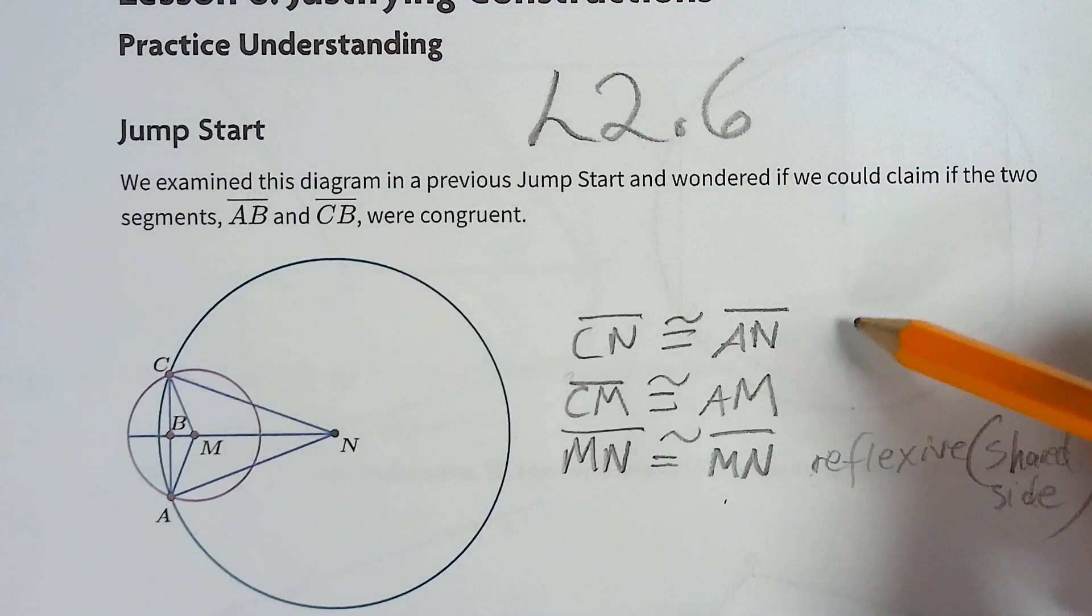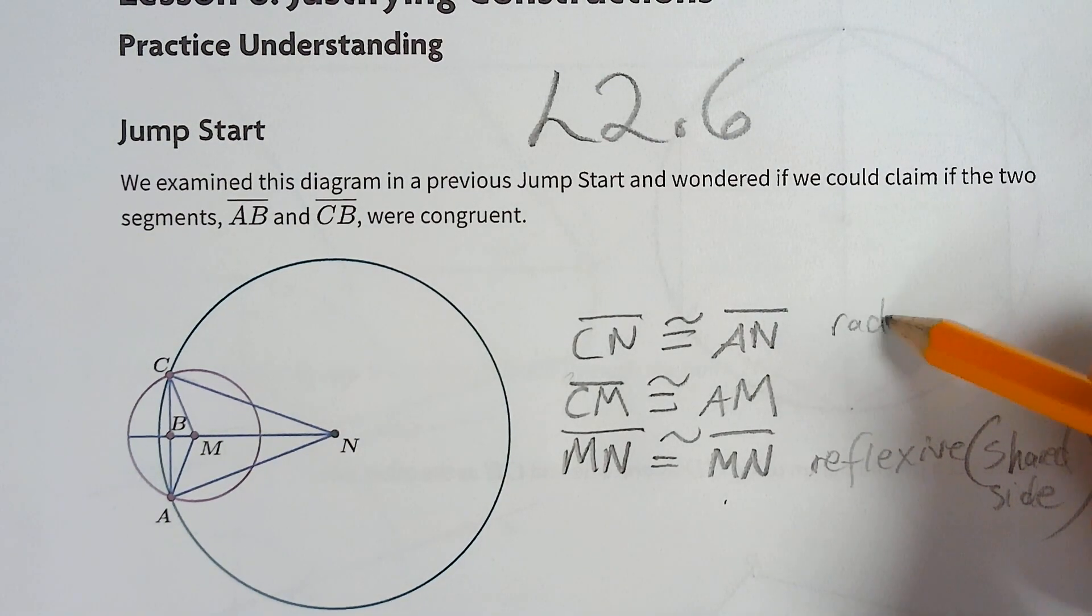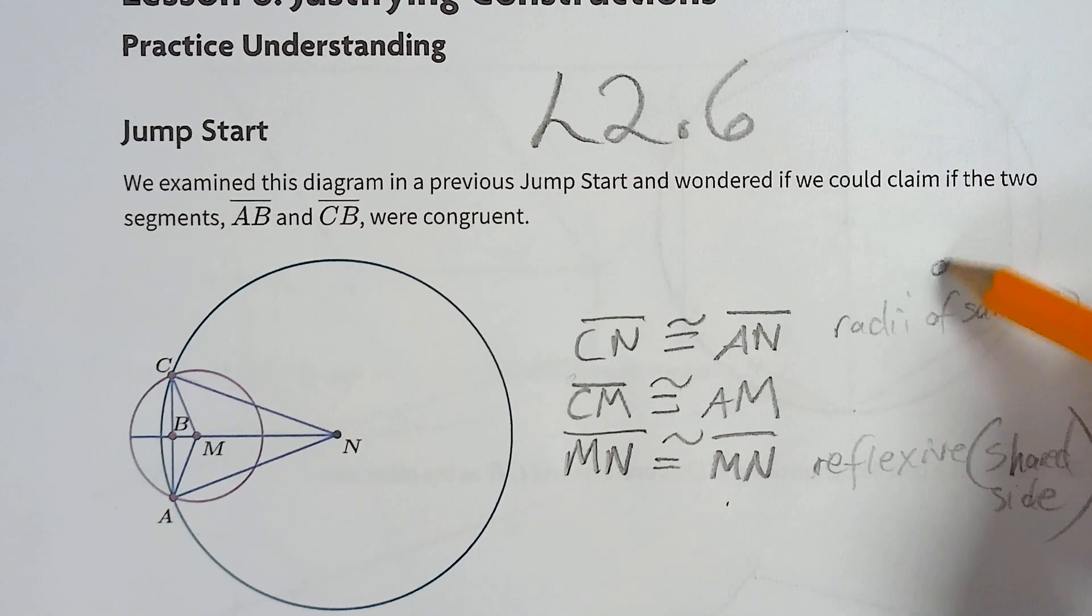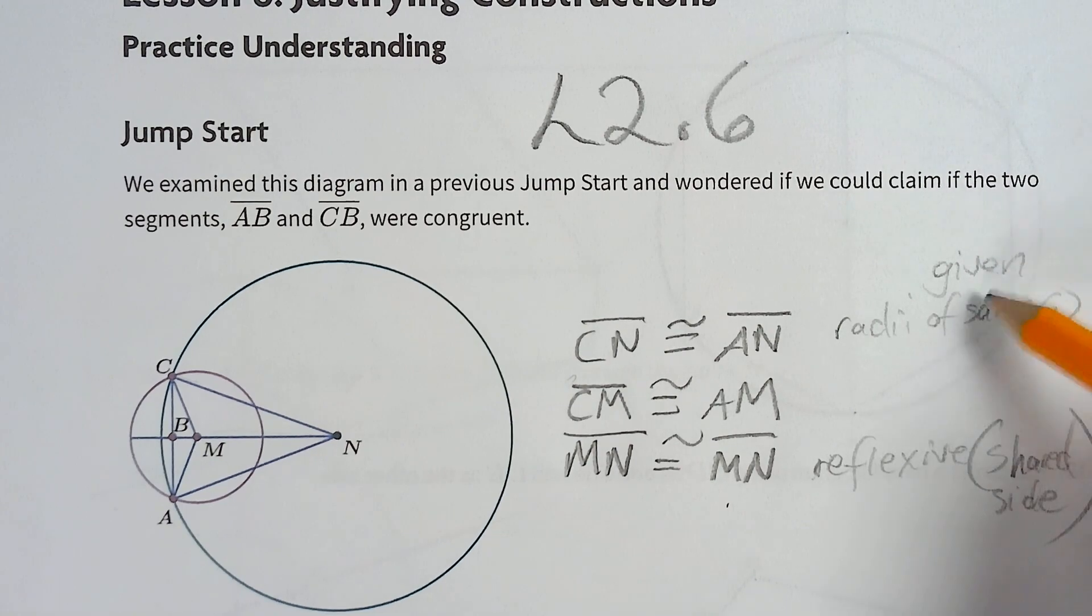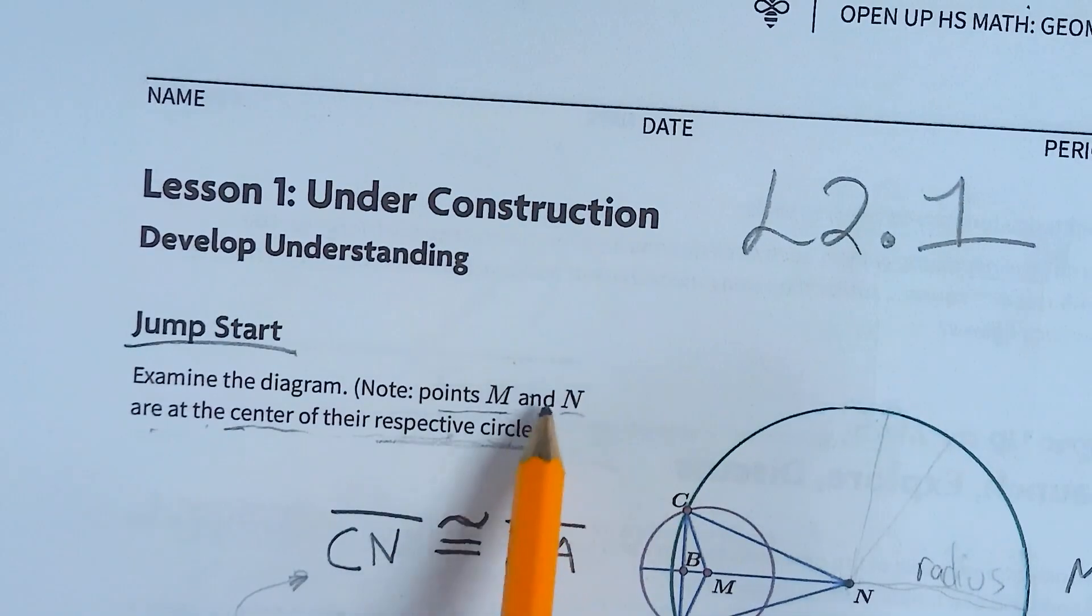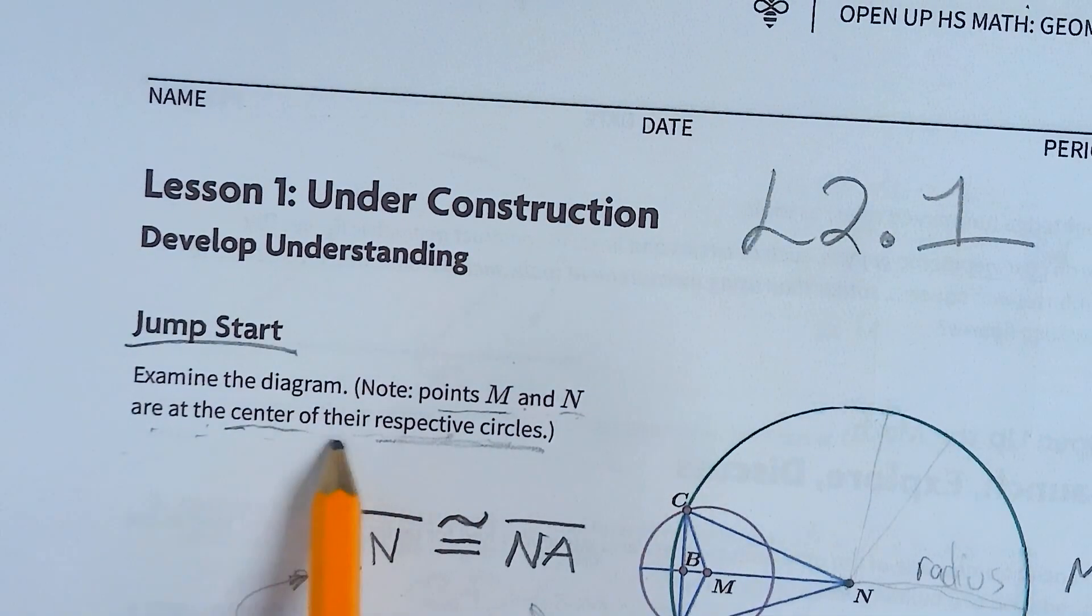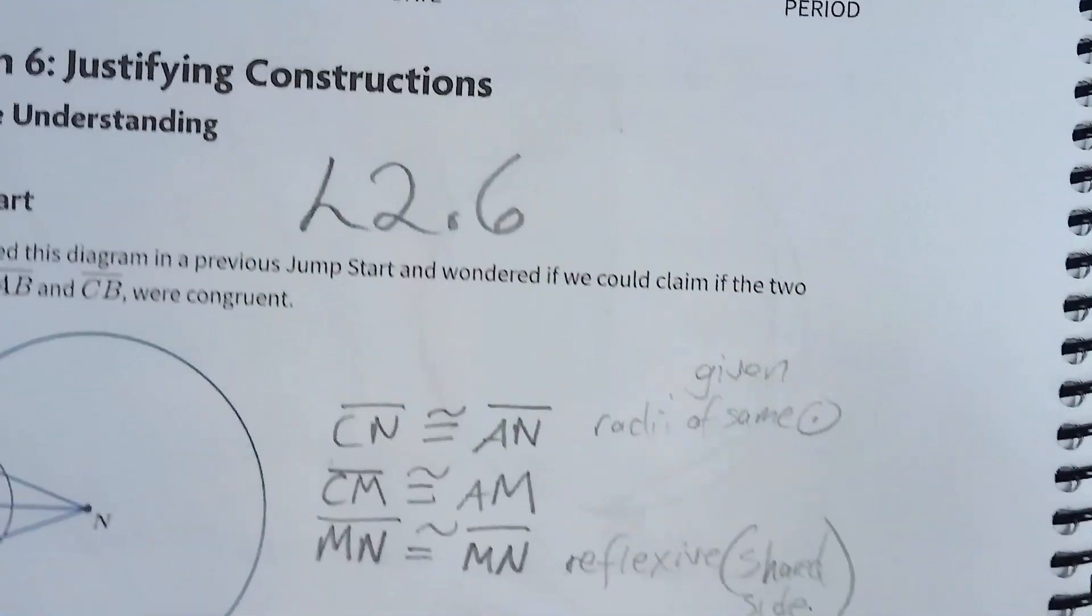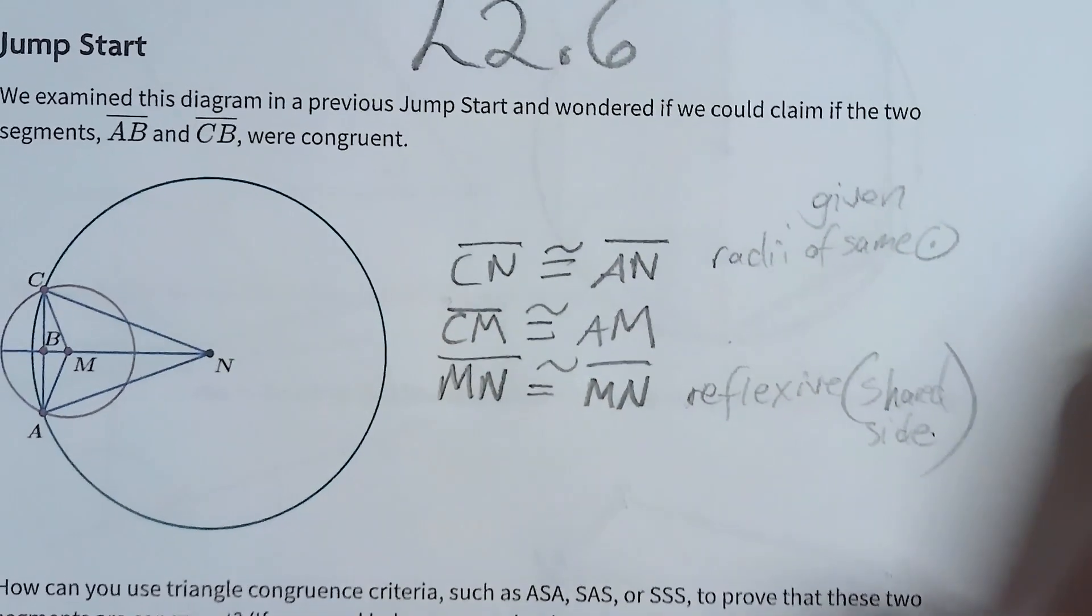These are basically given, these are radii of same circle, which is given to us. It's not given to us here, but it says at the very beginning of the book M and N are at the center of their respective circles. So that is what allows us to say that these segments are radii and therefore they are congruent.